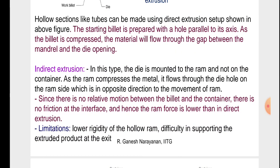Indirect extrusion: in this type, the die is mounted onto the ram and not on the container. As the ram compresses the metal, it flows through the die hole on the ram side, which is in the opposite direction to the movement of the ram. Since there is no relative motion between the billet and the container, there is no friction at the interface and hence the ram force is lower than in direct extrusion.